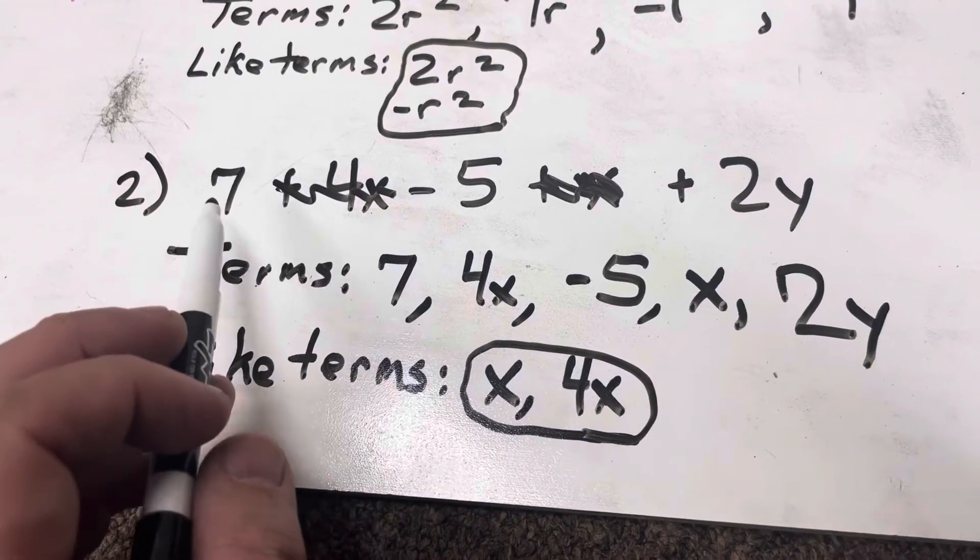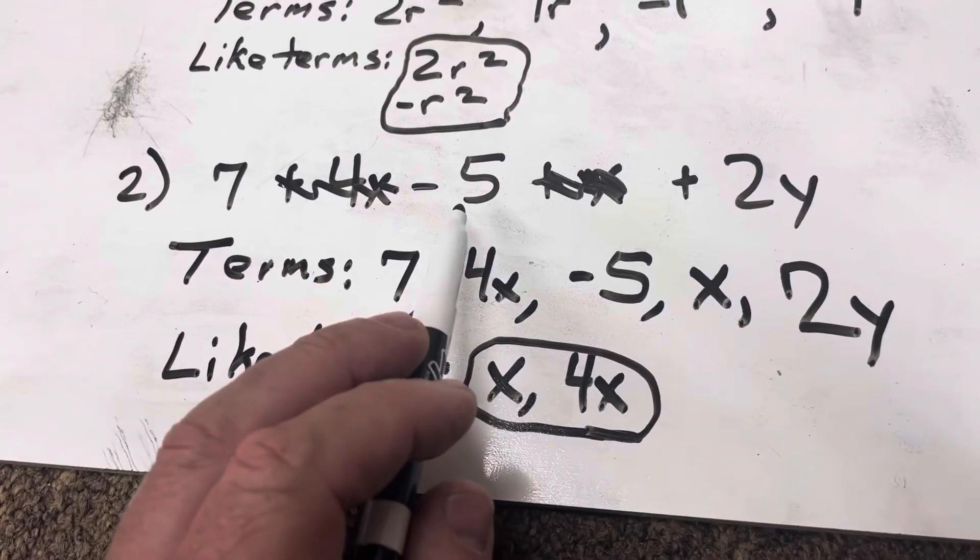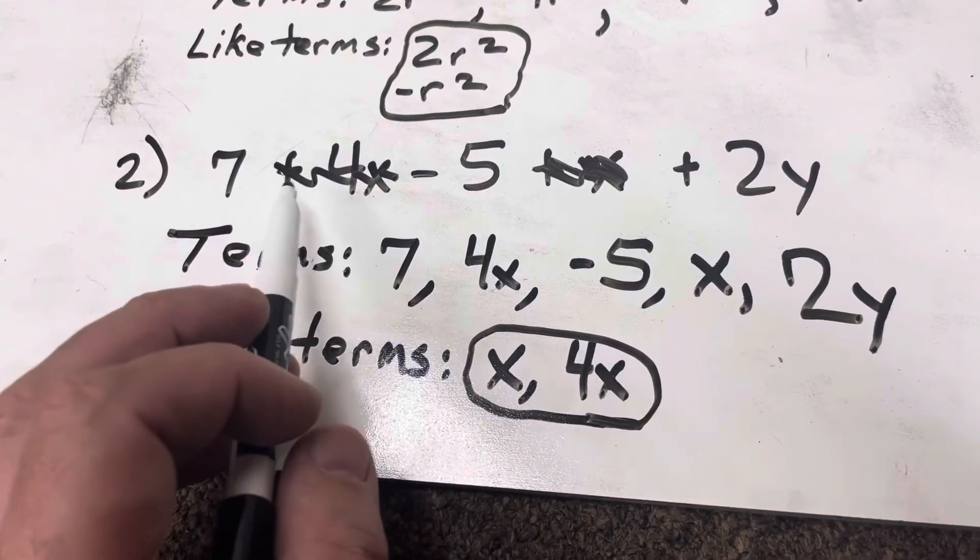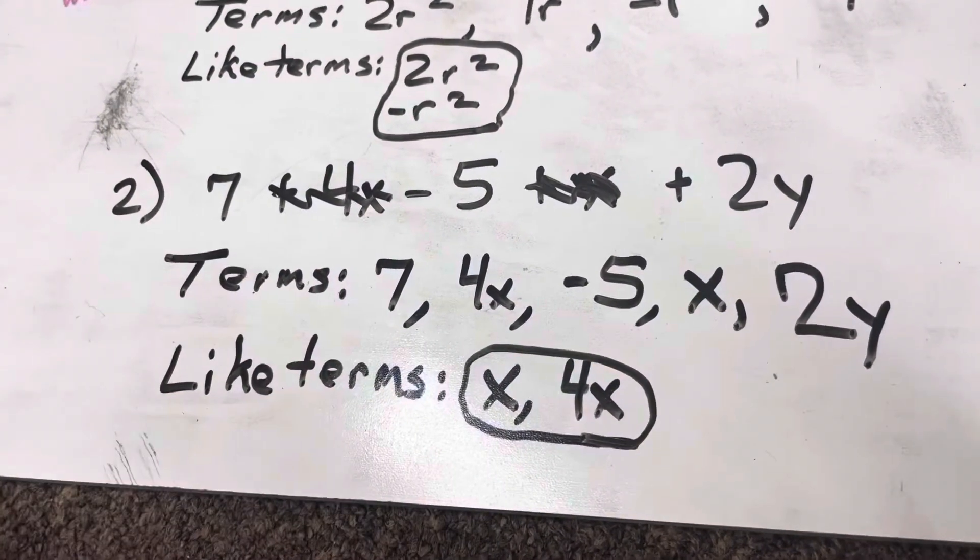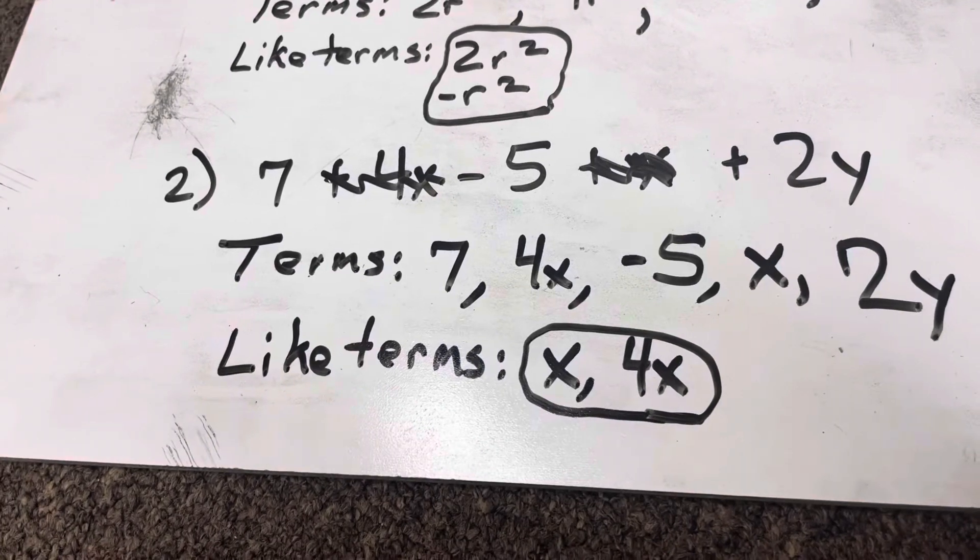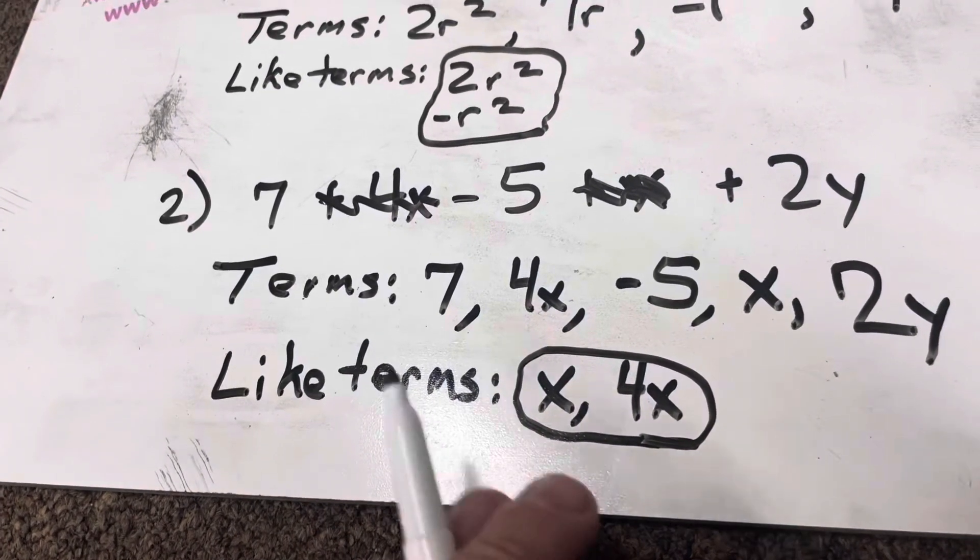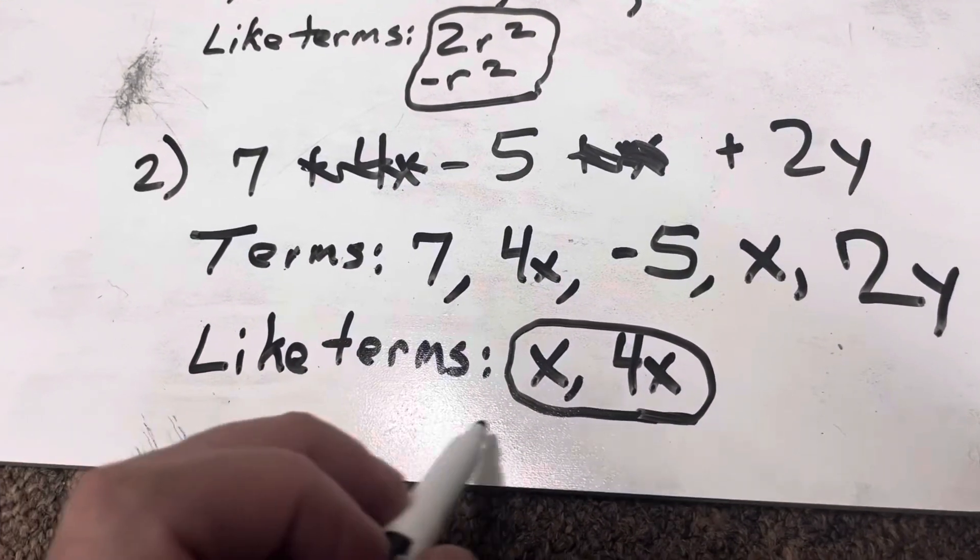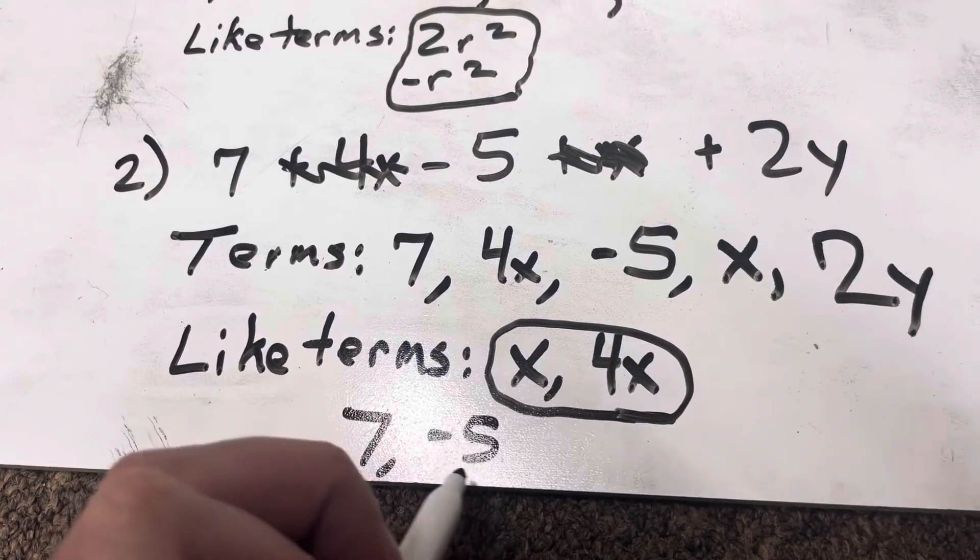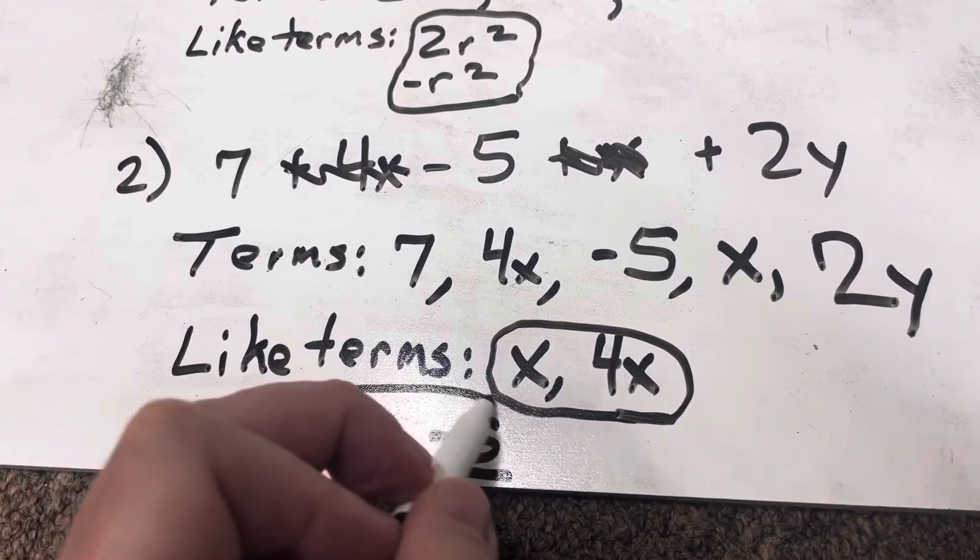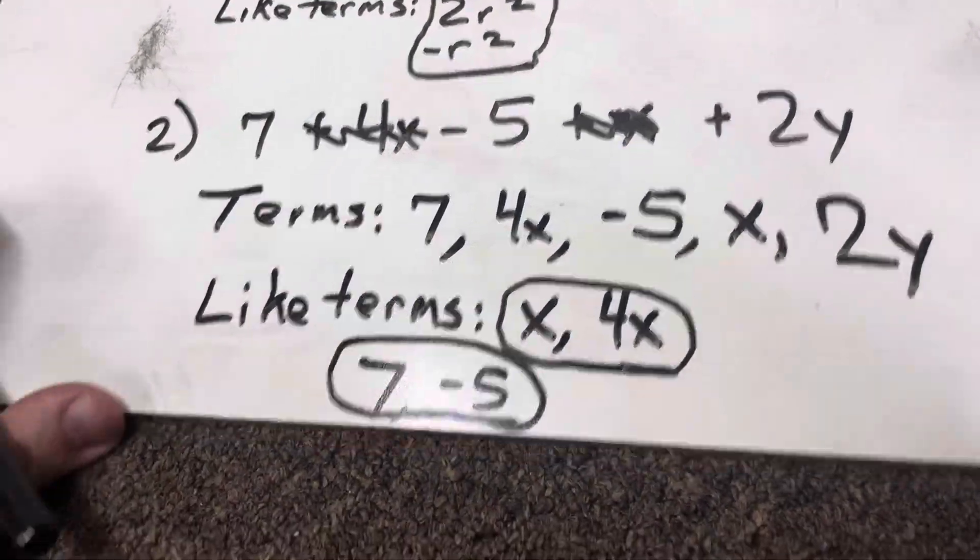But now I have just two numbers, 7 and negative 5. There's no exponent. There's no variable. So they are like terms in the sense that they have the same variable. There isn't one. And they have the same exponent that there isn't one. So the like terms would be 7 and negative 5. Let's move right along.